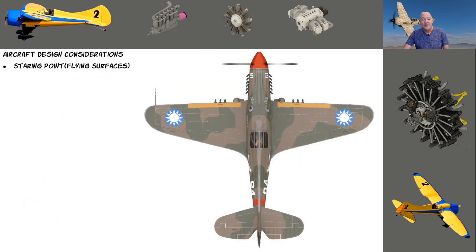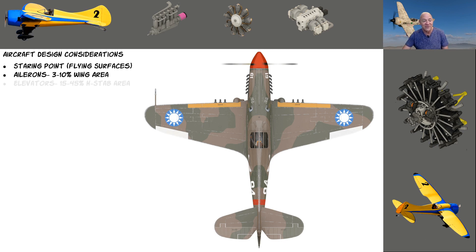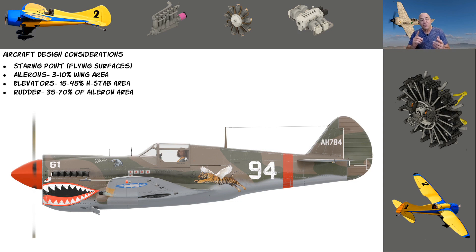When we talk about the basics of design and aileron size, normally they are 3 to 10% of wing area. A lot of that depends on wingspan — the longer the wingspan, the ailerons can be a little smaller because they've got more moment arm. Smaller ailerons will require a smaller rudder, because the bigger the aileron, the more adverse yaw and the bigger the rudder you need. The elevator is 15 to 45% of the horizontal stabilizer area. The rudder — something I made up that's worked perfectly — is 35 to 70% of the aileron area, with both ailerons added up.